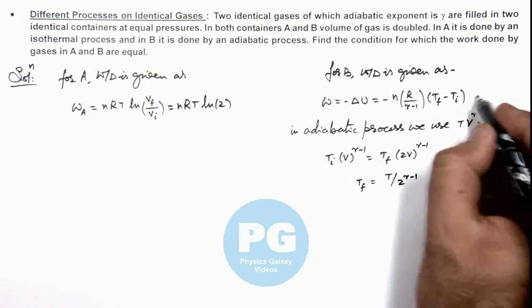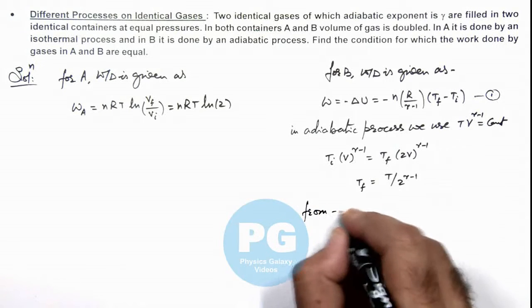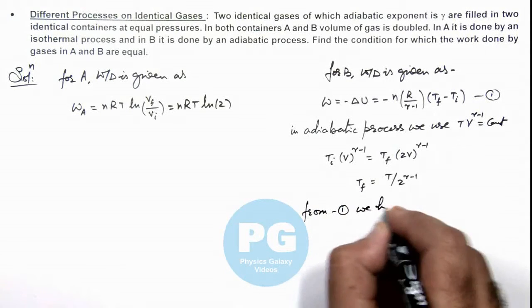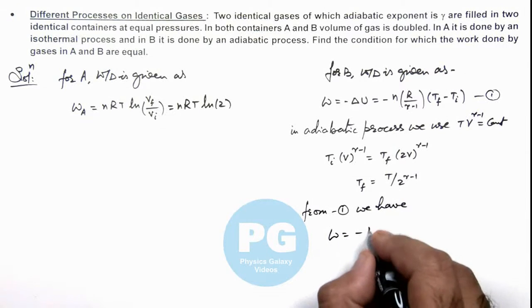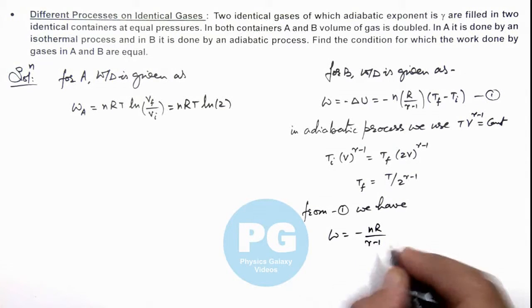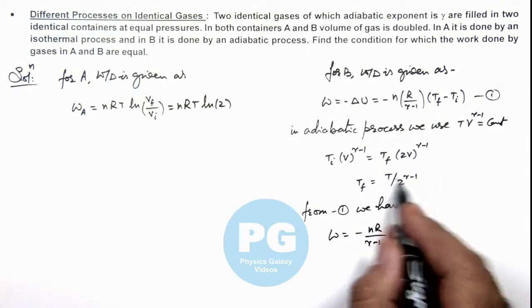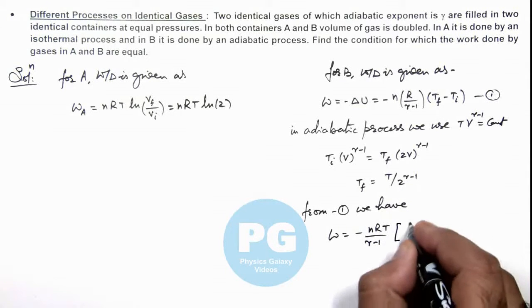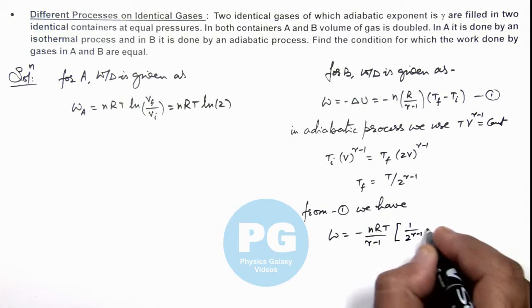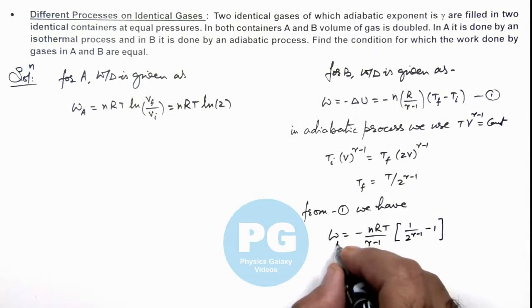So from this relation, if it is equation 1, then we can write from equation 1 we have work done equal to minus nR/(gamma-1). This T_final we can write T/2^(gamma-1), so T we can take common and this 1/2^(gamma-1) minus 1. This work done we are getting can be written as W_B.